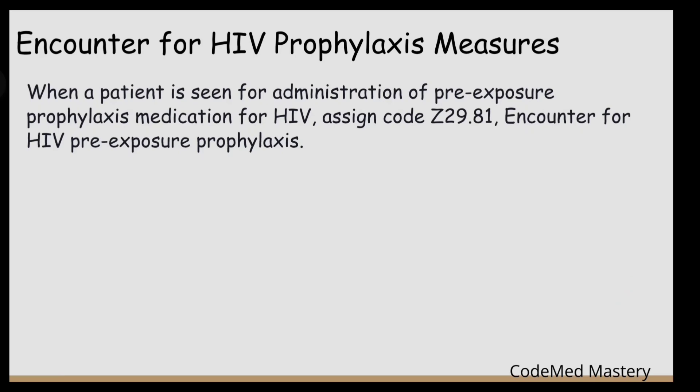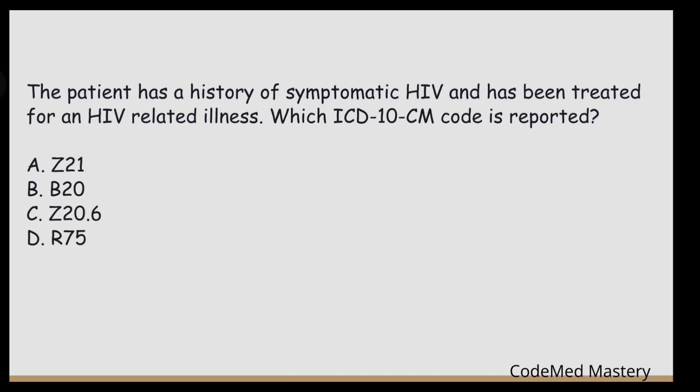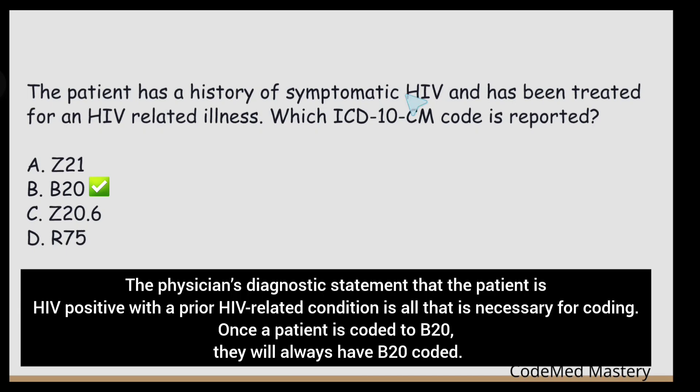Practice question: A patient has a history of symptomatic HIV and has been treated for an HIV-related illness. What ICD code is reported? The correct answer is option B — B20 — because it is the appropriate code for a patient with symptomatic HIV and treatment for an HIV-related illness. Since the patient is HIV positive and has been treated for an HIV-related illness, code B20 is used.